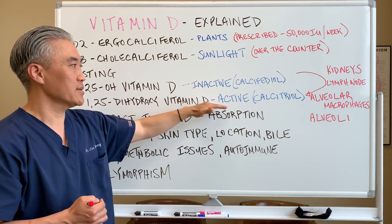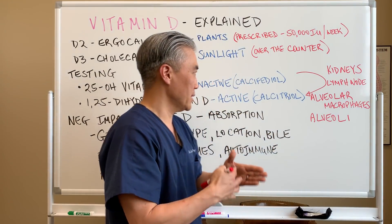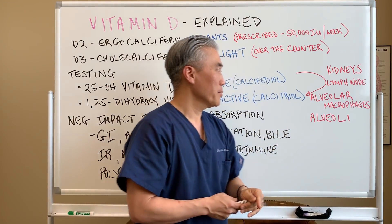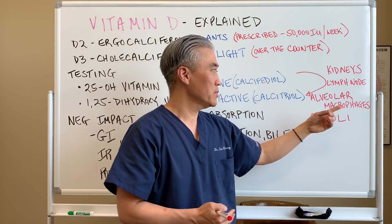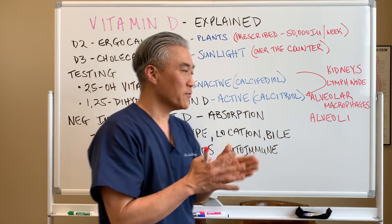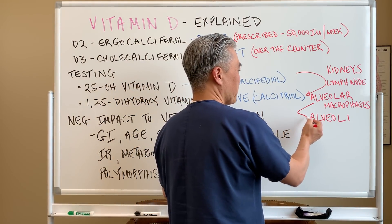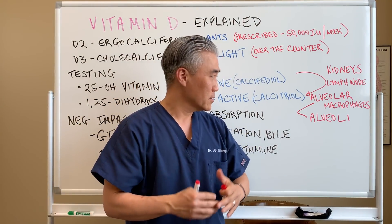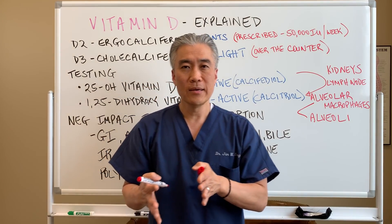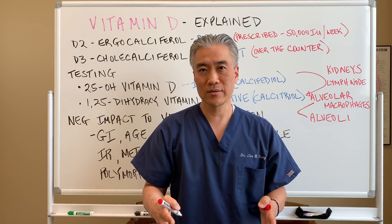If we take vitamin D, how do we convert it into the active form? It's primarily through the kidneys, which have a big function in that, but it also occurs in lymph nodes — part of your immune system — alveolar macrophages, which is the immune system of the lungs, and alveoli. So the conversion of inactive to active forms of vitamin D can occur in these tissues. Since lung cells are responsible for converting vitamin D from inactive to active forms, if you take vitamin D, your lungs are healthier and can fight off infections. It can impact the immune system of the lungs and the oxygenation and carbon dioxide removal — very important for COVID, influenza, viruses, and pneumonia.